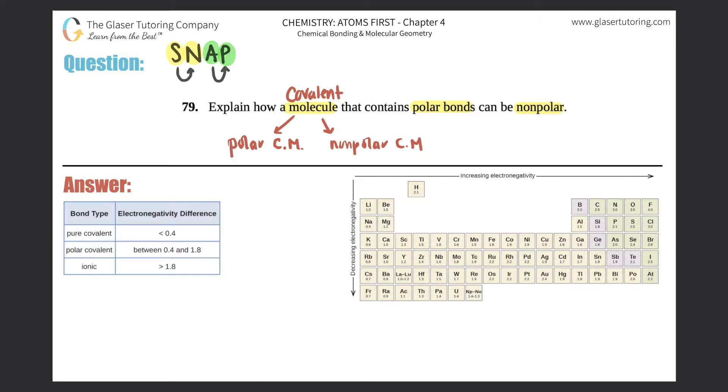So you could think of the word SNAP: Symmetrical, nonpolar, asymmetrical, polar. Okay, so that's what that breaks down to. Polar would be asymmetrical and nonpolar would be symmetrical.